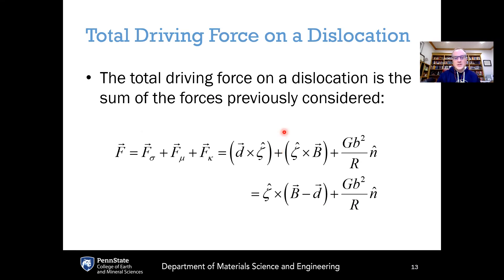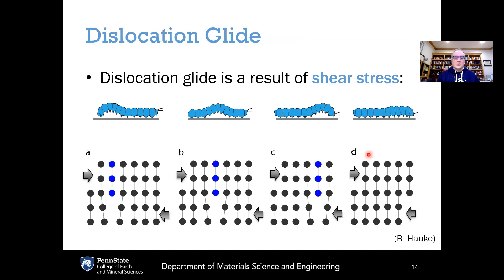Taking these three forces and putting them together, if you add up all three force vectors you get the total driving force that induces motion of a dislocation. This total driving force F is the summation of the mechanical force F_sigma — given by the D vector crossed with zeta — plus the osmotic force, which results from the disequilibrium of vacancies locally, plus the curvature force F_kappa. Adding these three equations from the previous slides gives us the total force acting on a dislocation to cause its motion.